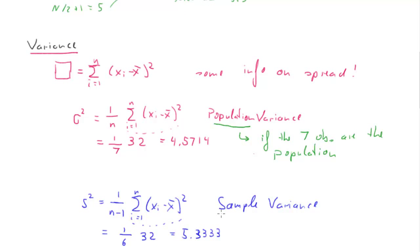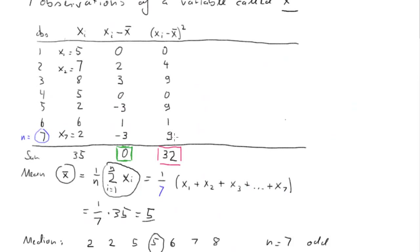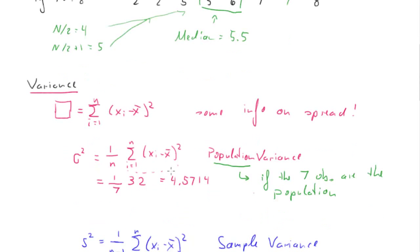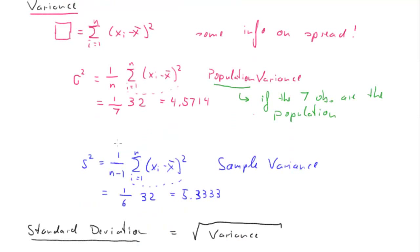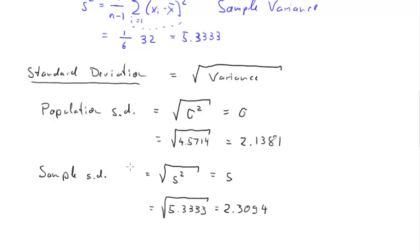To recap: the only core calculation needed for both variance and standard deviation is the sum Σ(x_i − x-bar)² = 32, best done in a table. Then for variance, divide by n for population or by n−1 for sample. For standard deviation, always calculate the variance first, then take its square root.